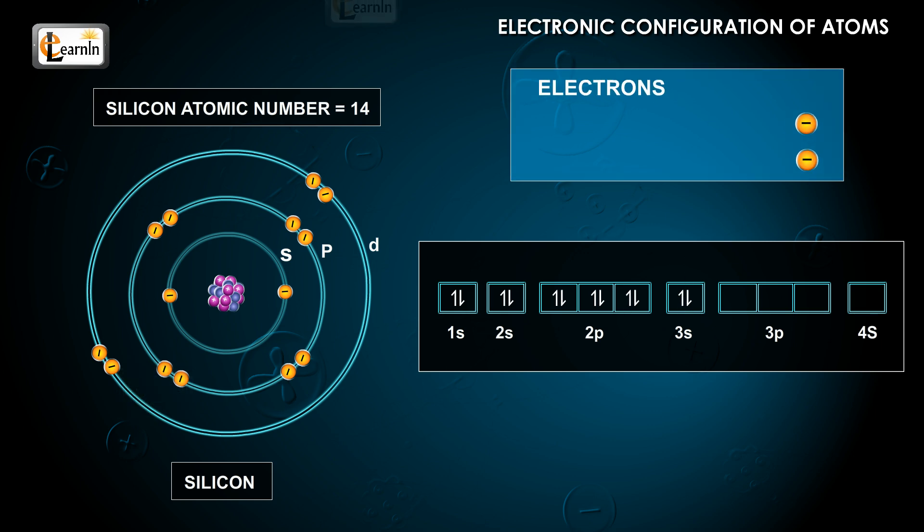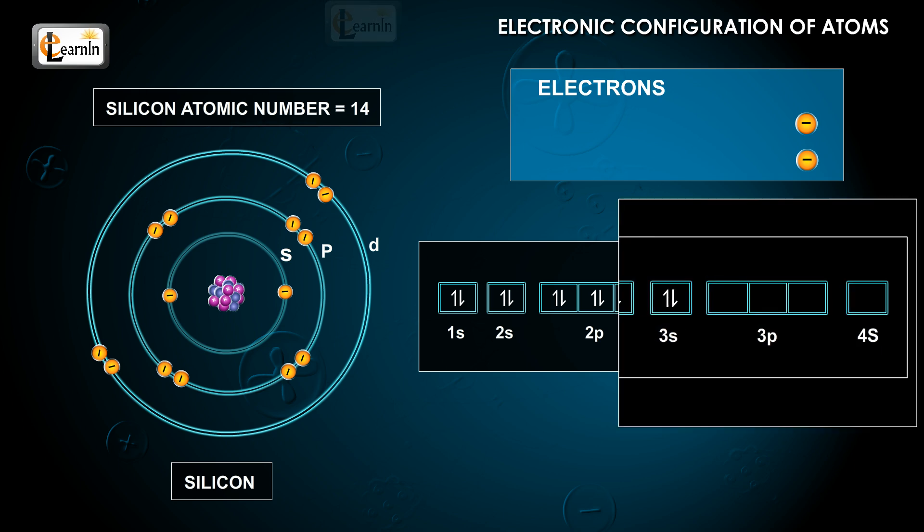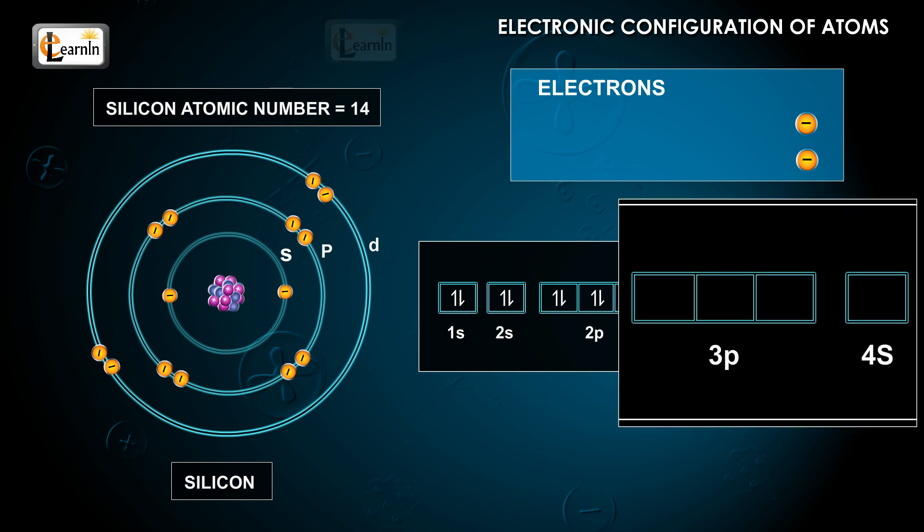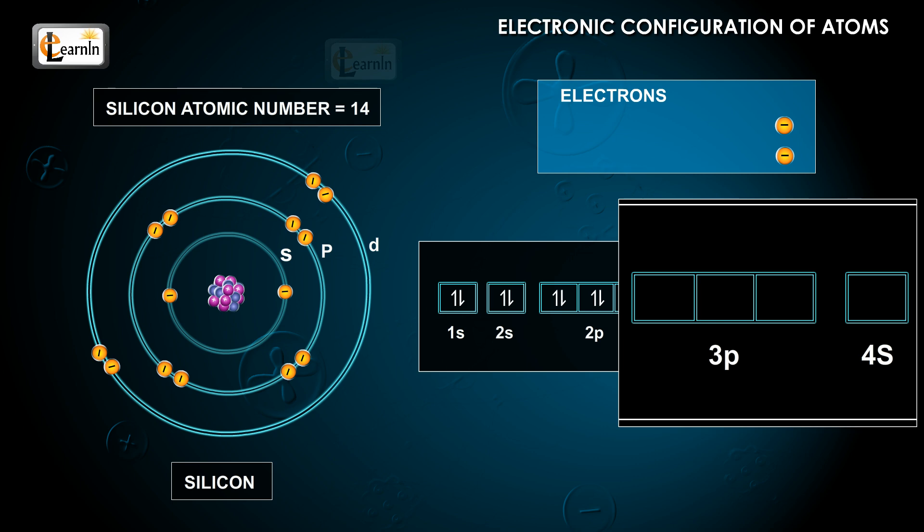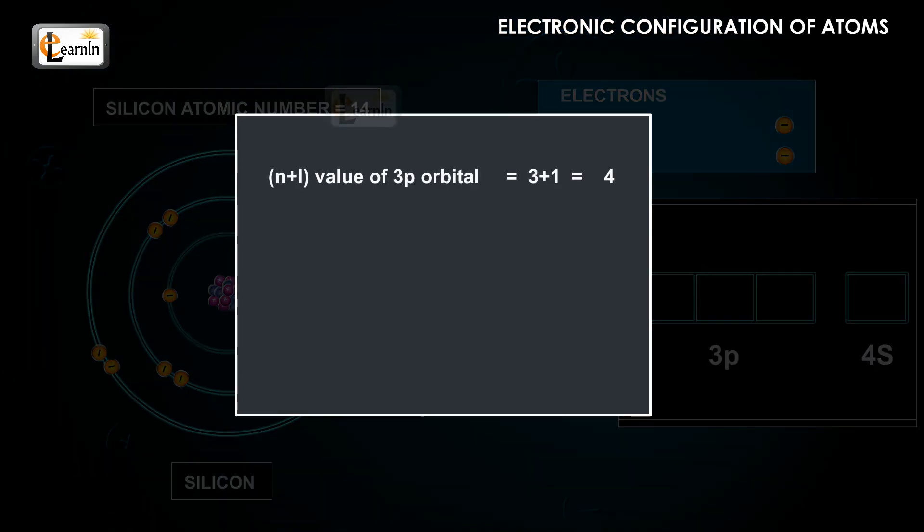Now, the last two electrons can enter into the 3p or 4s orbital. The n plus l values of these orbitals are the same. That is to say, 3p orbital has n plus l value of 3 plus 1 equals 4, and 4s has an n plus l value of 4 plus 0 equals 4.